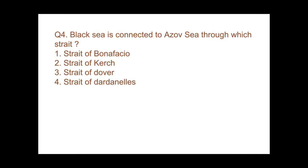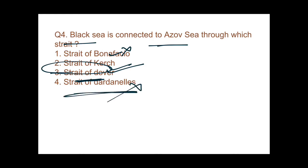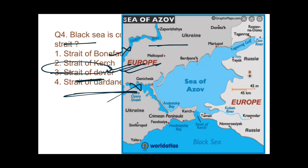Question 4: the Black Sea is connected to the Sea of Azov through which strait? Option 1 — Strait of Bonifacio: wrong, it separates Sardinia and Corsica. Option 2 — Strait of Kerch: correct. Option 3 — Strait of Dover: wrong, Dover Strait is in the UK. Option 4 — Strait of Dardanelles: wrong. The answer is the Strait of Kerch. On the map you can see the Sea of Azov connected to the Black Sea by the Strait of Kerch.